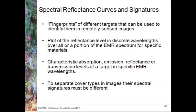A spectral reflectance curve is a plot of the reflectance level in discrete wavelengths. We've already seen a couple of these plotted and you'll become more and more familiar with in particular the vegetation one as we go throughout the semester. This may be over all of the EMR spectrum or it might be for particular portions of it, but it's always specific to a particular material. What it shows for us are characteristic absorption, emission, reflectance, or transmission levels of that target in specific electromagnetic radiation wavelengths.